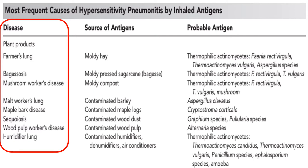For farmer's lung, the source is moldy hay and the probable antigens are thermophilic actinomycetes — Micropolyspora faeni, Thermoactinomyces vulgaris, and Aspergillus species. For bagassosis: moldy processed sugar cane, thermophilic actinomycetes. For mushroom worker's disease: moldy compost, thermophilic actinomycetes. For malt worker's lung: contaminated barley, Aspergillus clavatus. For maple bark disease: contaminated maple logs, Cryptostroma corticale.